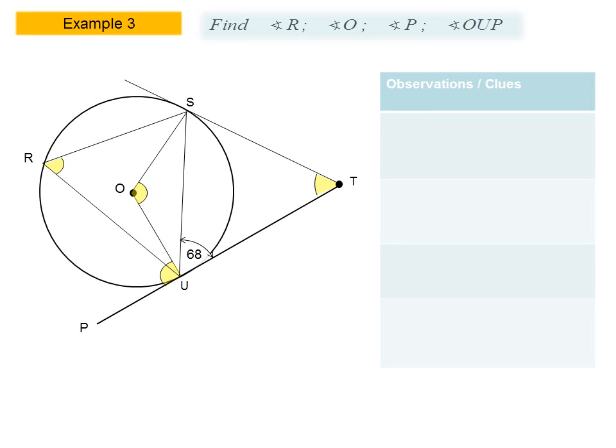In our third example, we begin as before by looking carefully for clues in our diagram. We are given one angle of 68 degrees and are asked to determine four angles shown in yellow.